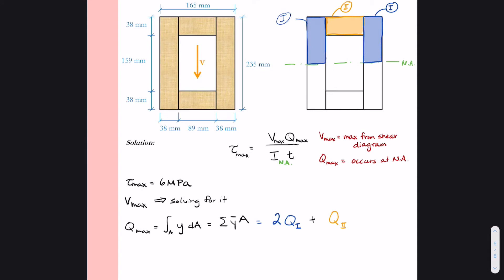So we'll get into the calculations here. So we have to do Y bar times A. So for the blue area, we need to determine what Y bar is. Now Y bar is the distance from the neutral axis to the center of gravity of the blue shaded area.